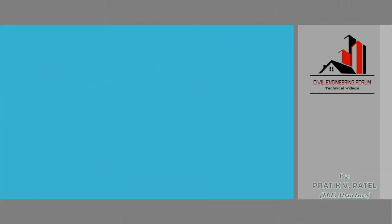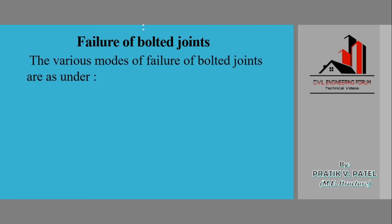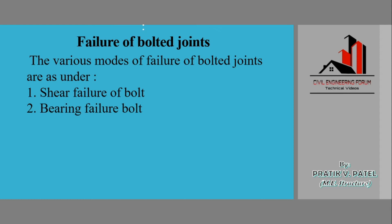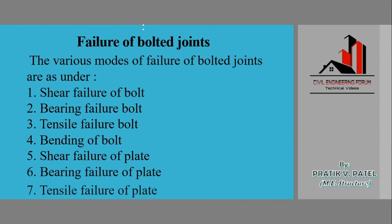Hello friends, welcome to my channel Civil Engineering Forum. We are in the 11th part of the topic Connections, where today we are going to talk about failures of bolted joints. The various modes of failure of bolted joints are: shear failure of bolt, bearing failure of bolt, tensile failure of bolt, bending failure of bolt, shear failure of plate, bending failure of plate, and tensile failure of plate. Any bolted connection can have any of these failures, which we will understand one by one in detail today.